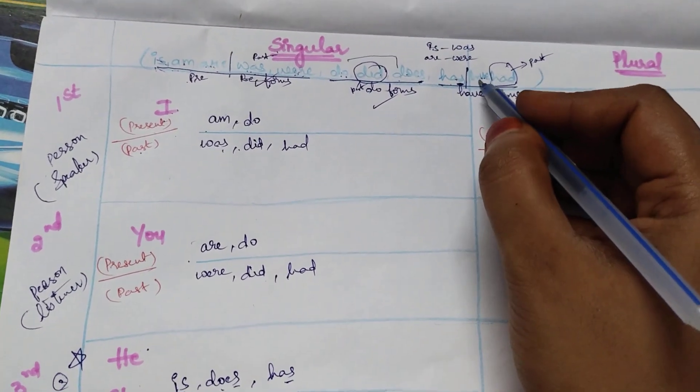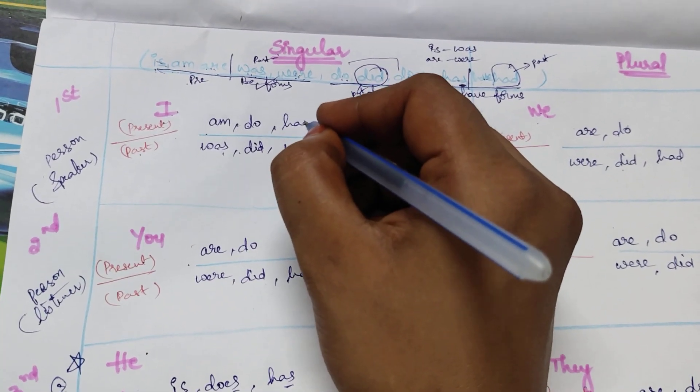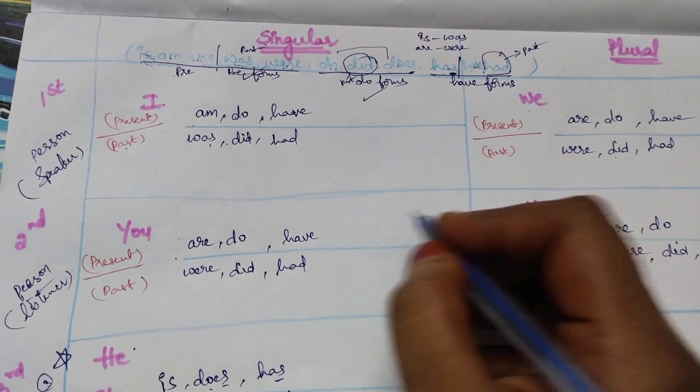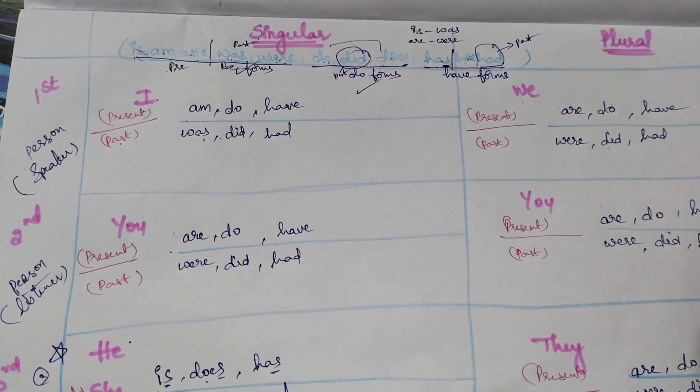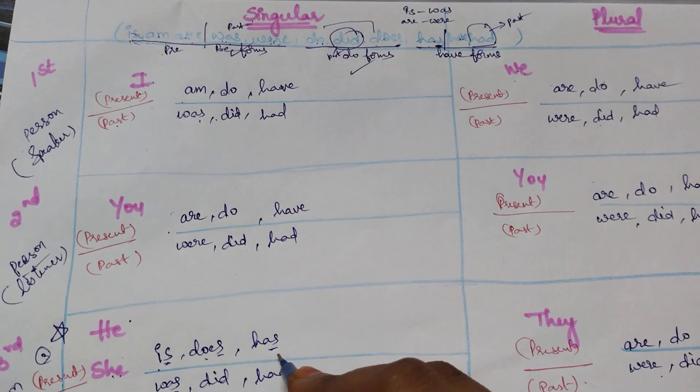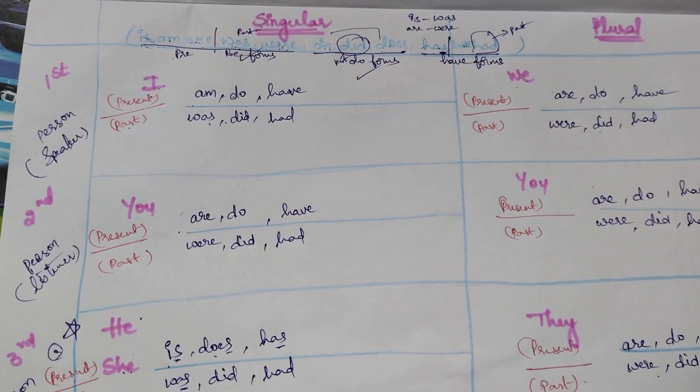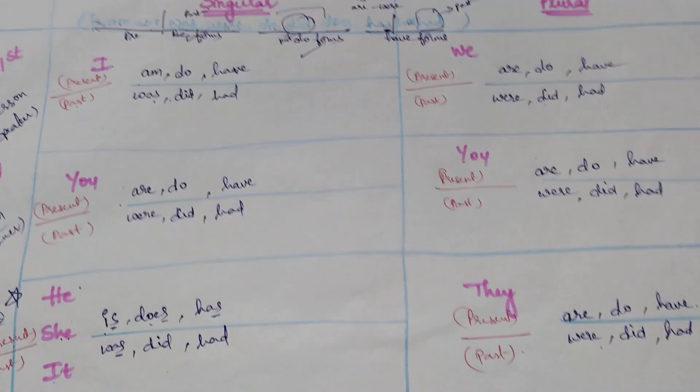Now what is the remaining thing? Have. I have, we have, you have. Can I write here have? No, it is already reserved. So have.